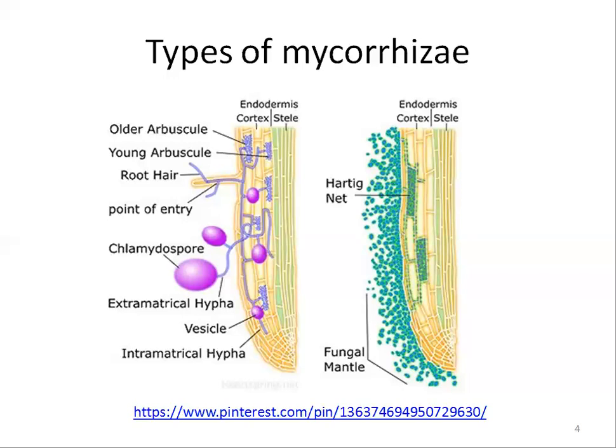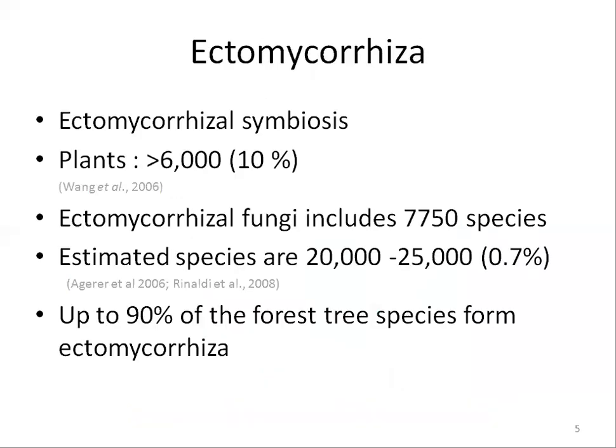These emanating hyphae get nutrients for the plant from the soil. Some species form a special type called ectendmycorrhizal, which can be classified as actendomycorrhizal because they show features of both ectomycorrhiza and endomycorrhiza. Monotropoid mycorrhizal form a special category and will be discussed in the next lecture. Now we will focus on ectomycorrhiza in this lecture.